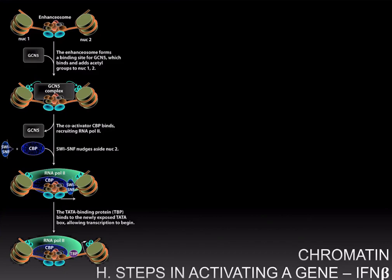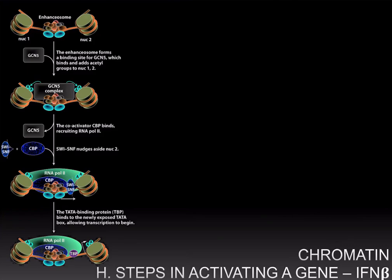Once the group of transcription factors called the enhanceosome is bound to the enhancer, the histone acetyltransferase GCN5 is recruited and forms the GCN5 complex. The GCN5 complex acetylates the histones in the two nucleosomes, making the DNA more accessible. This leads to binding of the coactivator CBP (CREB-binding protein) and recruitment of the SWI/SNF nucleosome remodeling complex. SWI/SNF then nudges nucleosome 2 to reveal the TATA box and transcription start site, allowing RNA polymerase to begin transcription.